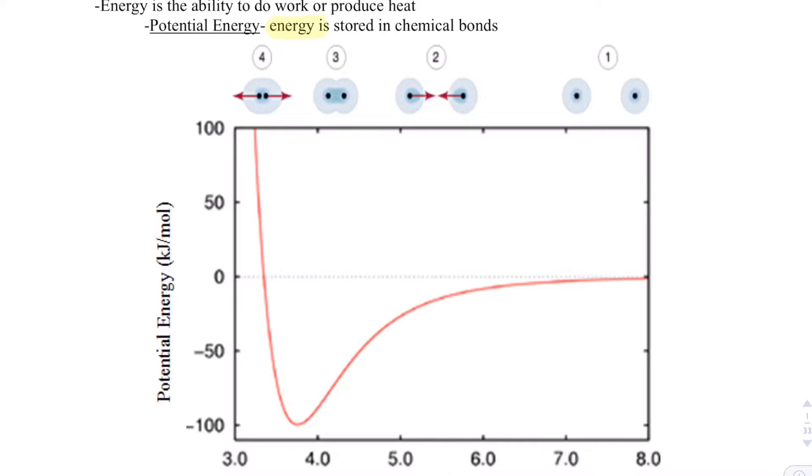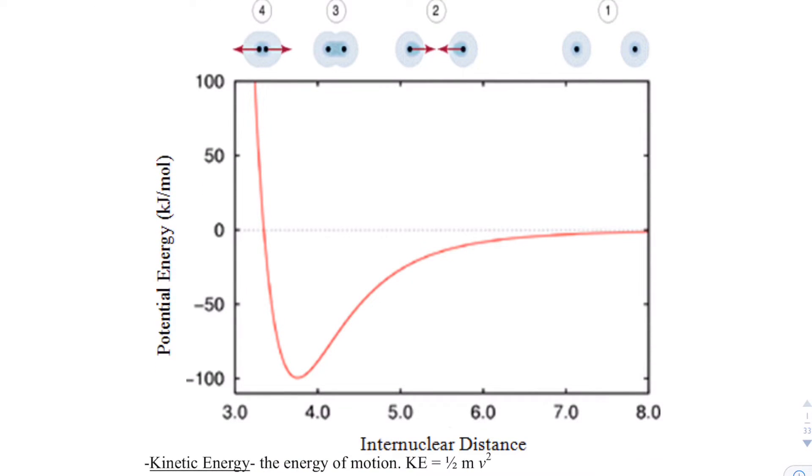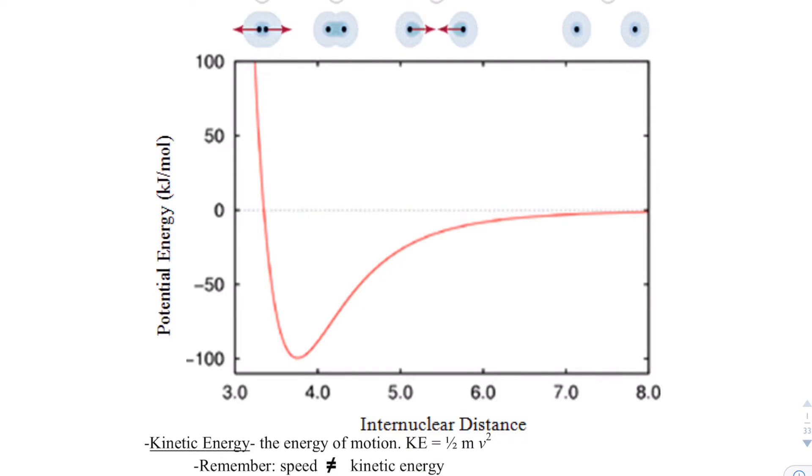Energy is stored in chemical bonds, and when you break a bond, that's going to require energy. We've seen pictures like this before where this is the ideal bond length because it releases the most energy, specifically 100 kilojoules per mole.